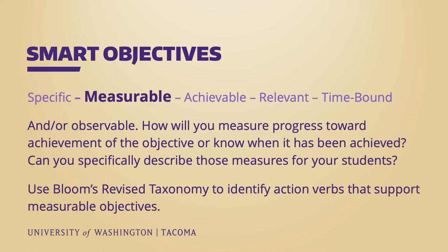Now, in addition to being specific, a quality objective will also be measurable. This is the second most common problem with learning objectives, but one that is naturally solved by making an objective specific and based on an action. To be measurable, ask yourself if the objective is observable, how you will measure progress and achievement, and how you will ultimately convey that to your students as part of an assignment's instruction or in the form of a rubric.